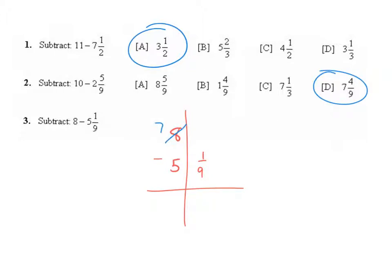The 8 becomes a 7, and the one whole I move over to the fraction column where it takes the name of the fraction I already have, which is ninths. It's going to be 9 ninths, which is one whole. 7 and 9 ninths is the same thing as 8. They are equivalent. 9 ninths minus 1 ninth is 8 ninths, and 7 minus 5 is 2. So my answer is 2 and 8 ninths.